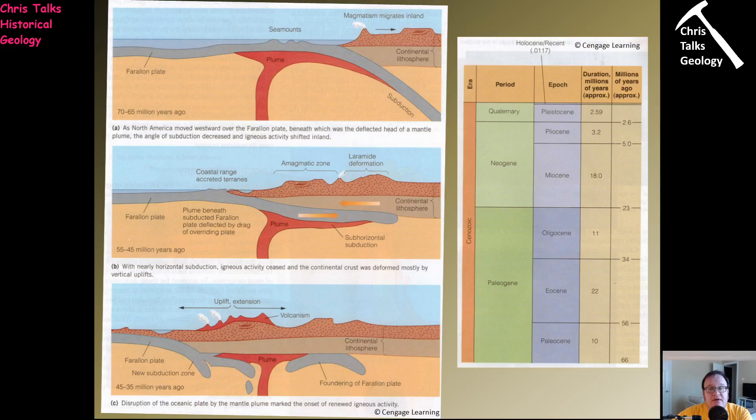The Colorado Plateau is a pretty decent-sized flood basalt terrain — a good amount of magma was erupted. You can see the timings in the diagram, with a geologic timescale showing where this falls in terms of epochs. This is a good place to stop the first part of the video — get up, have a walk around, get a drink, and come back for the second half when you're ready.